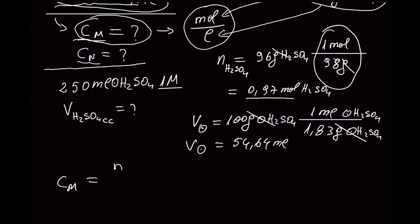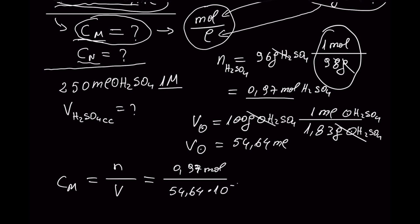The volume of the solution is 54.64 mL. Now let's find the molar concentration. Molar concentration equals number of moles divided by volume of solution. So it is 0.97 mol divided by 54.64 × 10⁻³ L, because volume must be in liters. The molar concentration here is 17.75 M.